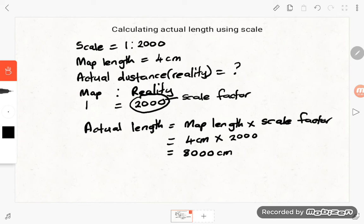So it means we have to convert the centimeters to kilometers. And remember, 100 centimeters is equal to 1 meter and 1000 meters is equal to 1 kilometer.